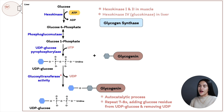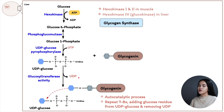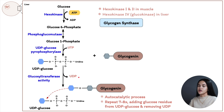This autocatalytic process repeats seven to eight times: a glucose residue from UDP-glucose is added and UDP is removed each time. Once enough residues have been added, glycogen synthase takes over and elongates the chain.